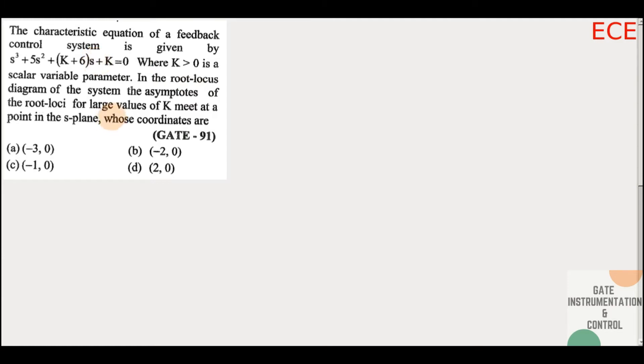So here we are given a characteristic equation, and we are asked: the asymptotes of the root locus meet at one point for large values of k — find the coordinates of that point. Simply, what is being asked here is the centroid.